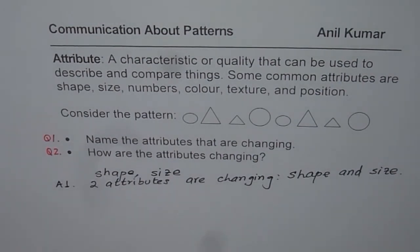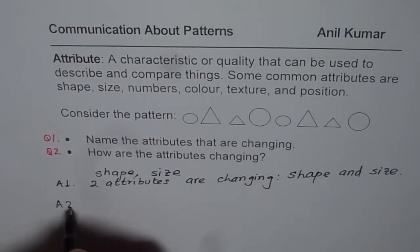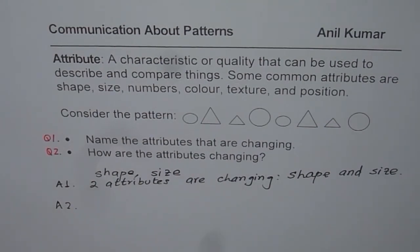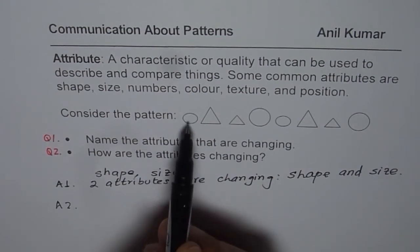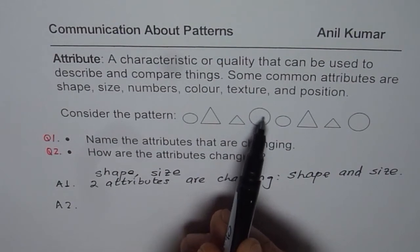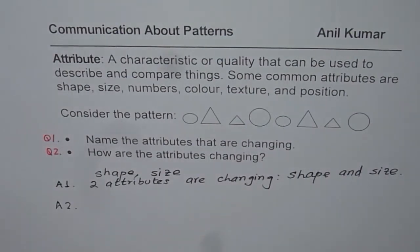Now let us answer the second question, which is how to describe this change. So you will use these attributes to describe the pattern. We need two criteria. One is shape, the other one is size. So we can call this as a small circle, big triangle, small triangle, big circle, small circle. And that's how we are going to describe it.